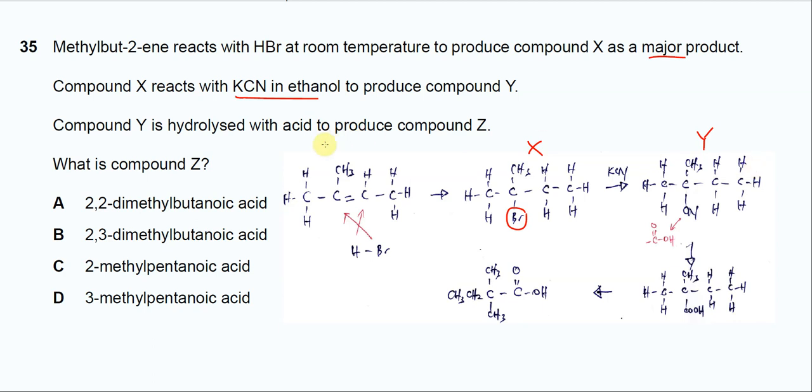After that, compound Y is hydrolyzed with acid. When it's hydrolyzed, we know that the nitrile group will react. The nitrile group's C triple bond breaks. This carbon will form COOH and the nitrogen will form ammonia. We don't care about the nitrogen, so we just need to know this carbon will form COOH, a carboxylic acid, forming this compound.